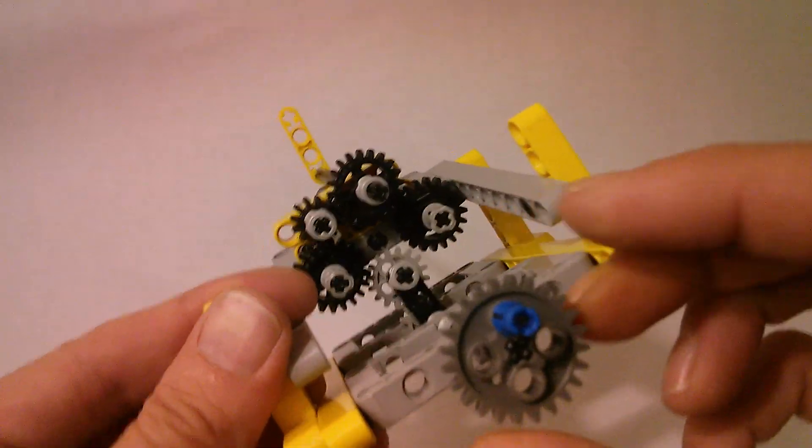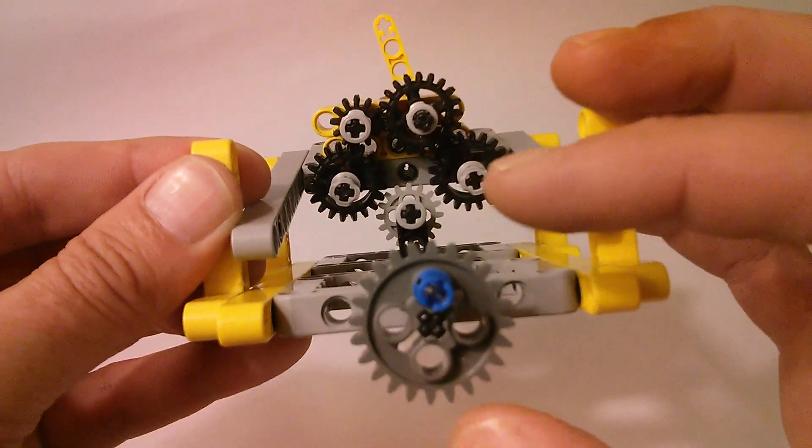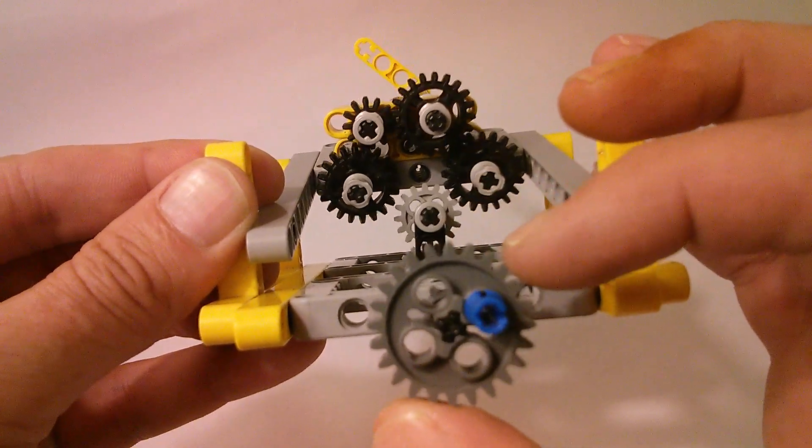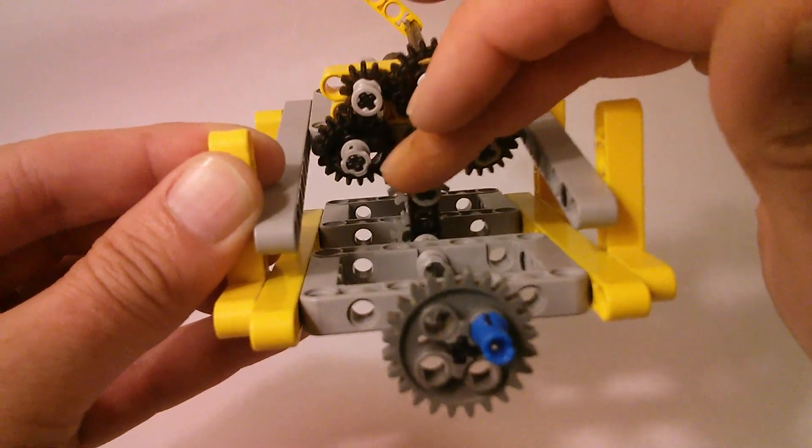Again, this is how it works. So if I try and do it slowly, you'll see how this little piece here, with a little bit of friction, moves that way or that way.